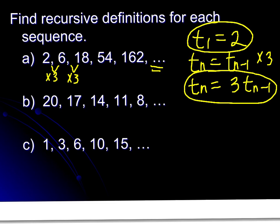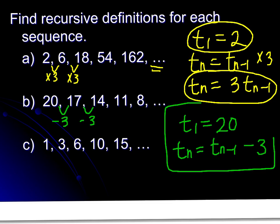For part b, we're going to attack this the same way. We're looking for a pattern. In this case, we're subtracting 3 with all of them. So we need two parts. In this case, our t sub 1 equals 20. And to define t sub n, we want to take t sub n minus 1, or the previous term, and subtract 3 from that. That would be your recursive definition. We're going to look at part c on the next slide.